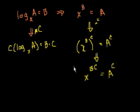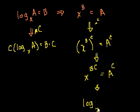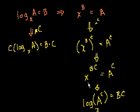What can we do now? Let's write this as a logarithm expression. We know that x to the bc is equal to a to the c. That's the exact same thing as saying that the logarithm base x of a to the c is equal to bc — because all I did is rewrite this as a logarithm expression.